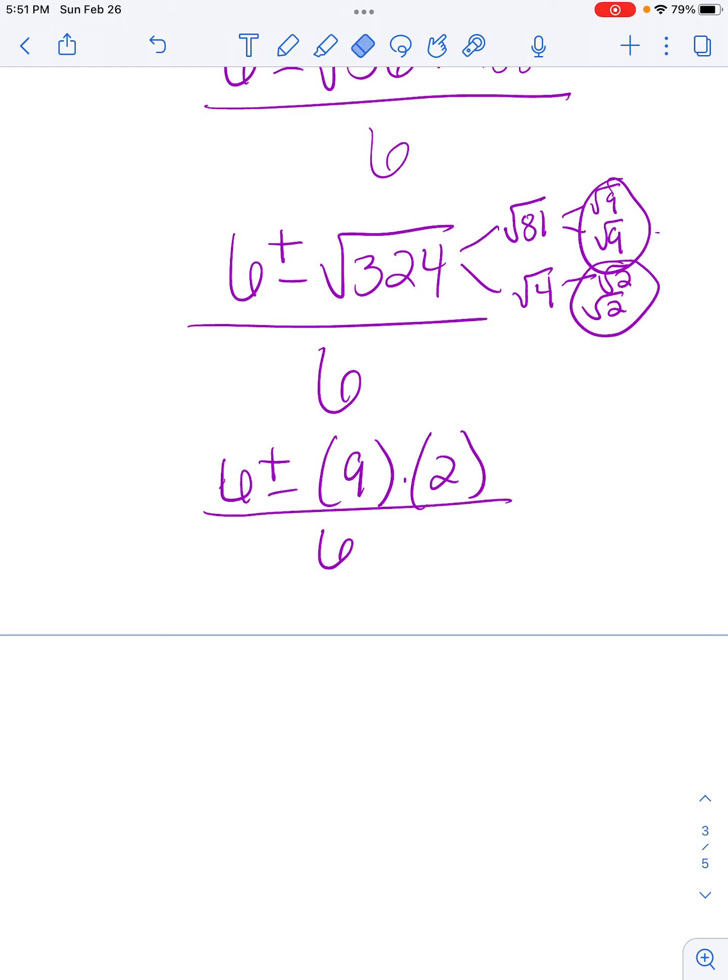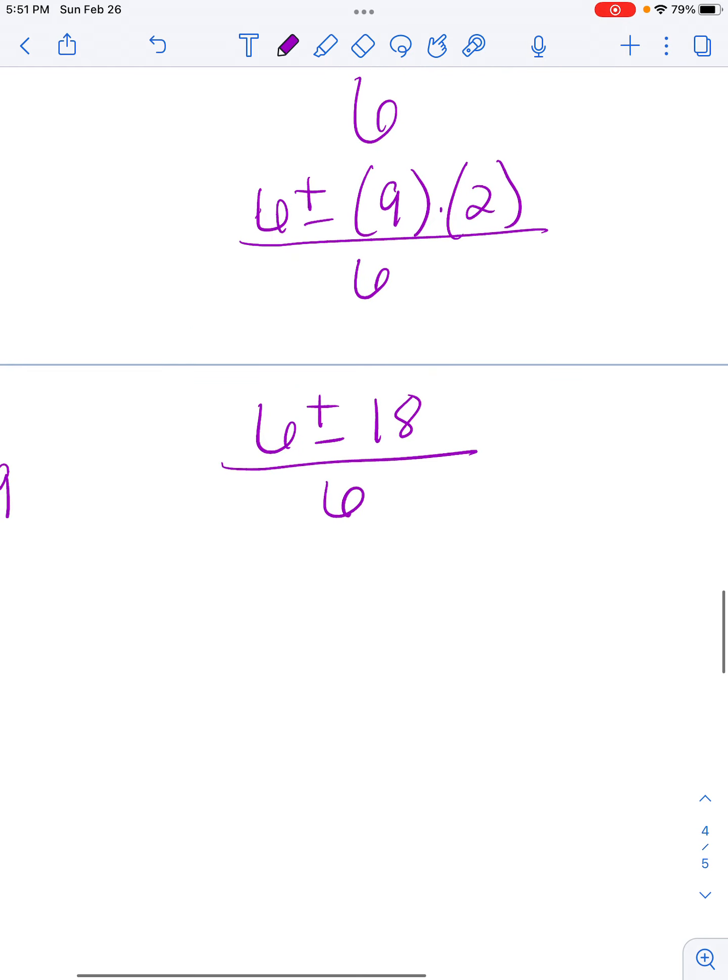So I'm going to erase these numbers and then I'm going to keep on simplifying. 6 plus or minus 9 times 2 is 18 over 6. Then I'm going to continue simplifying: 6 plus 18 over 6 and 6 minus 18 over 6.